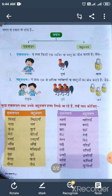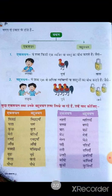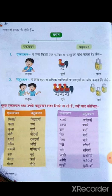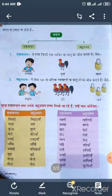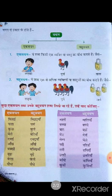इसी प्रकार और शब्द हैं — कुत्ता, बेटी, आँख, मक्की, बुलबुल, केला, पौधा, थाली, बच्चा। (These are more singular words whose plural forms will be noted.)